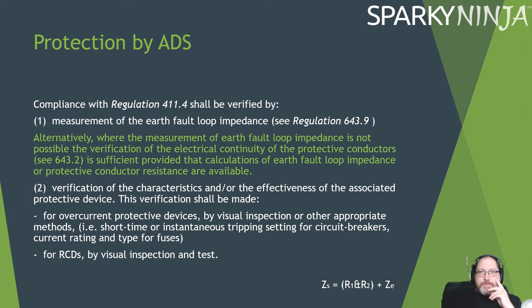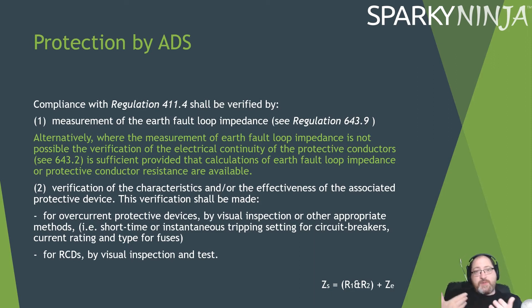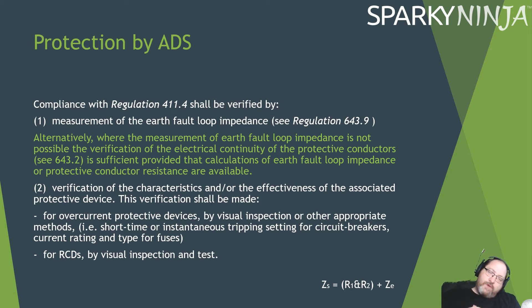Protection by ADS: compliance with Regulation 414 should be verified by measurement of the earth fault loop. Alternatively, when the measurement of earth fault loop impedance is not possible, verification of the electrical continuity of the protective conductors is sufficient, provided calculations of earth fault loop impedance or protective conductor resistance are available. So this is saying you can verify earth fault loop impedance if you have a measurement of continuity of the protective conductor — ZS equals R1 plus R2 plus ZE — confirming we can verify earth fault loop by a confirmed continuity measurement.